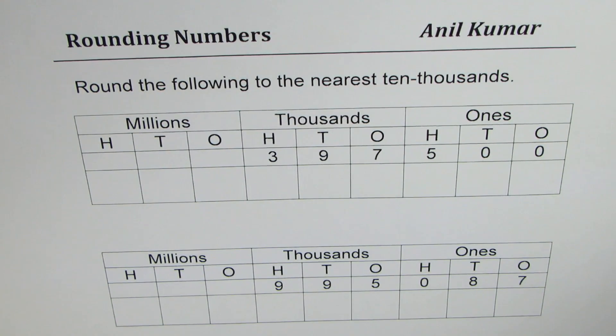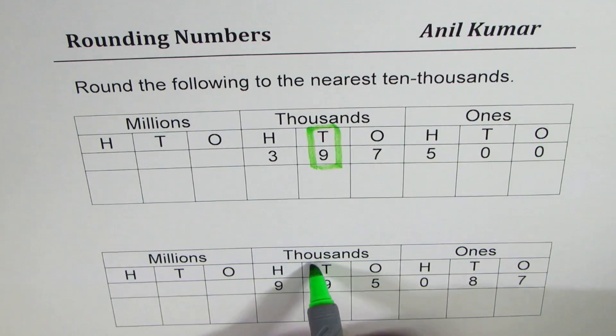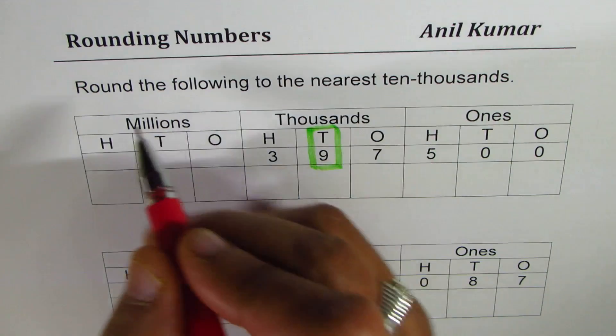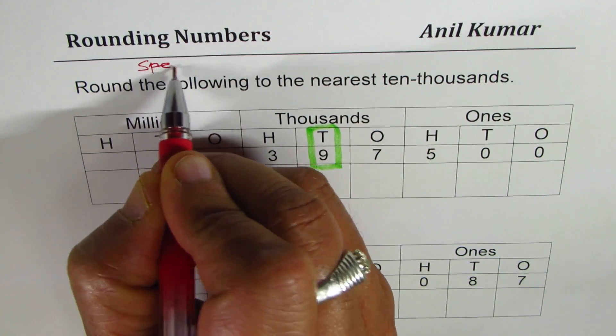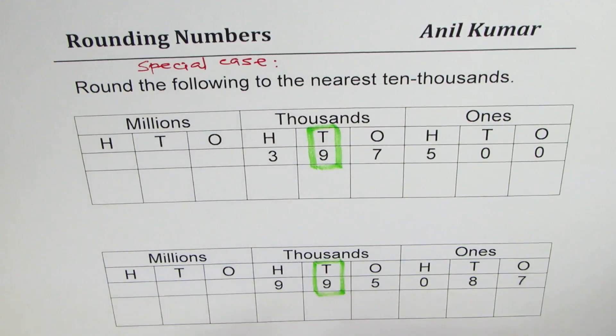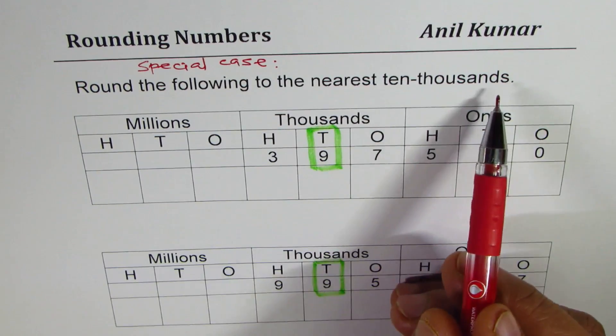And this time, take your time to round these numbers and then look into my solutions. Here you will notice that in 10,000 position, I have nine. Now this is a very special case. So let me write down here, special case. You will see how it is special.